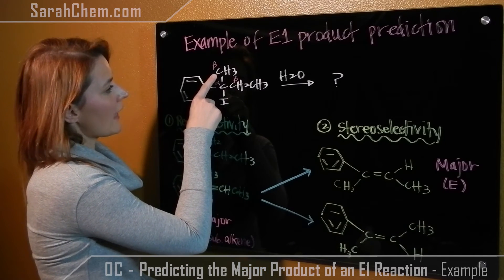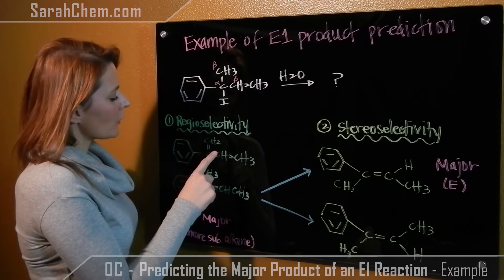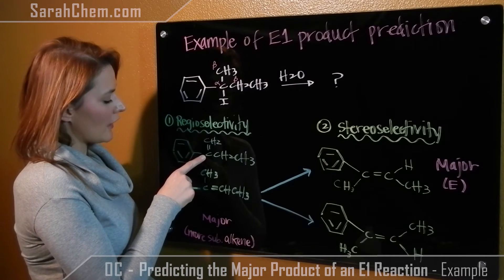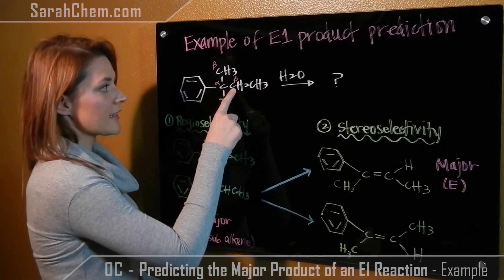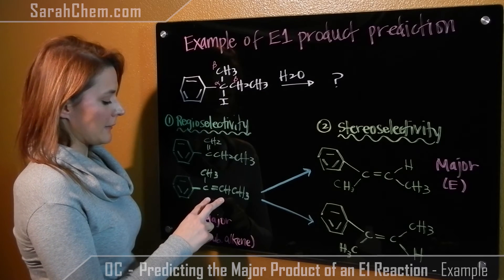If this one is the active beta carbon, then it would lose a hydrogen and we'd form an alkene right here. Alternatively, if this is the active beta, this is where we would form our alkene.